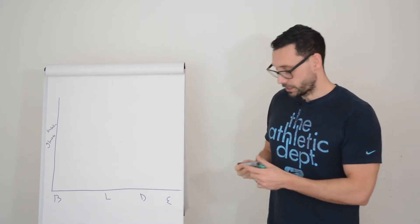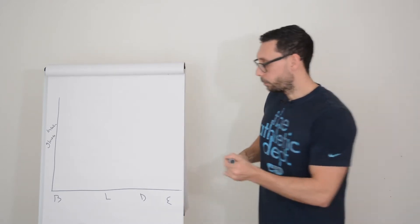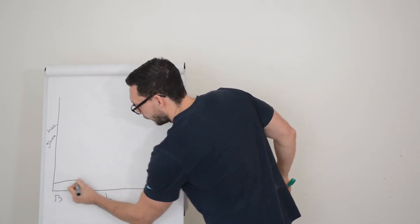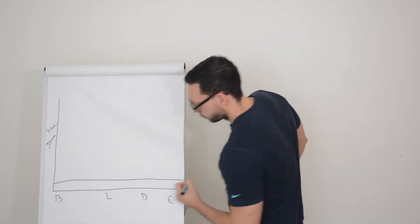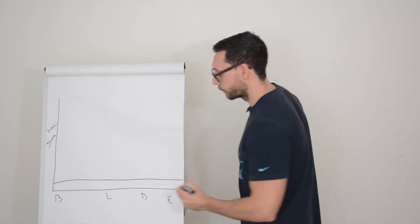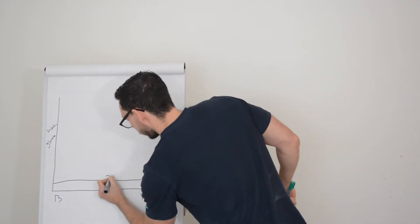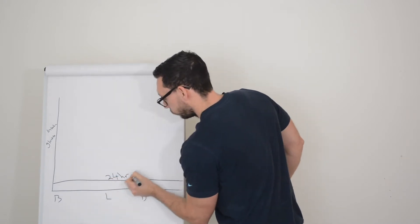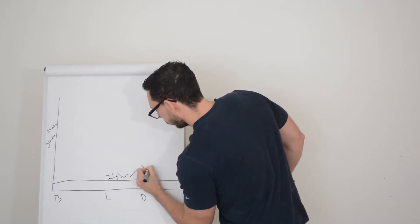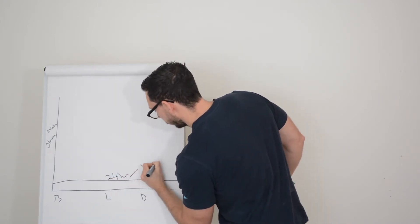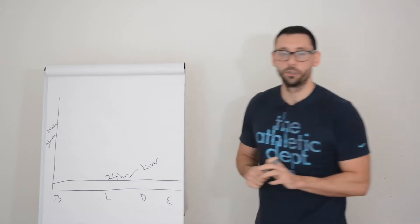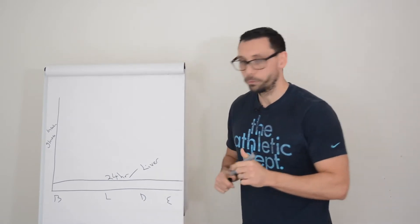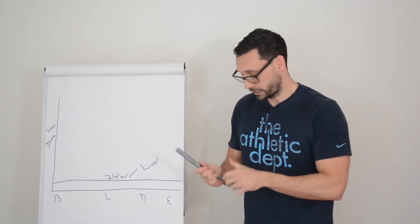Your background insulin is ticking away in the background, giving you 24-hour coverage. It's working on your liver, stopping your liver from kicking out too much glucose — nothing to do with food particularly.